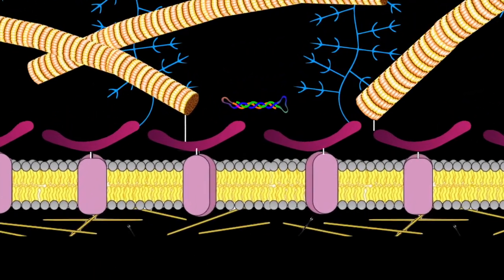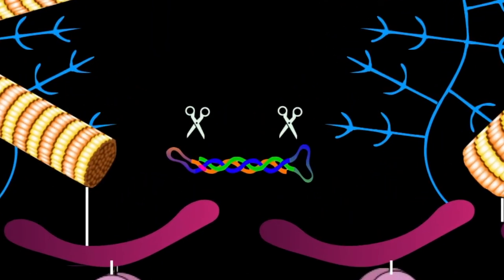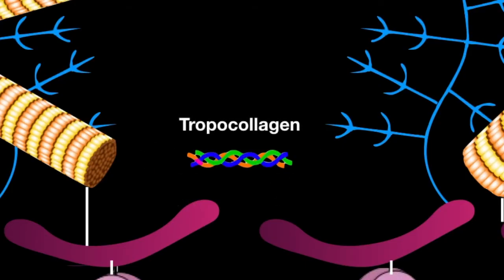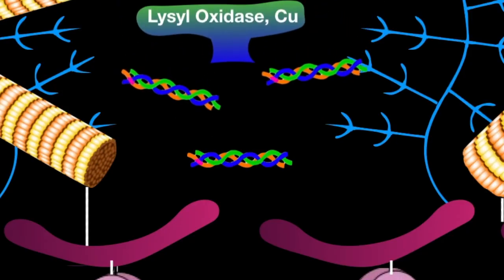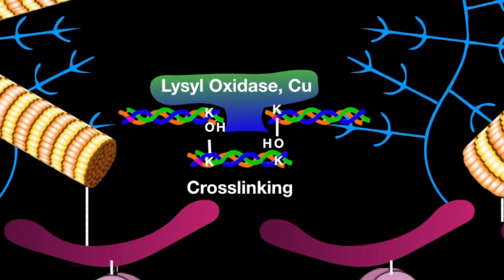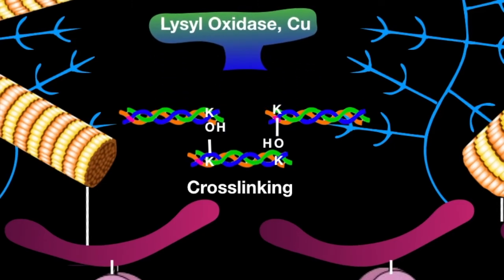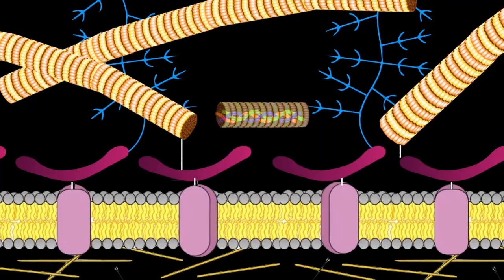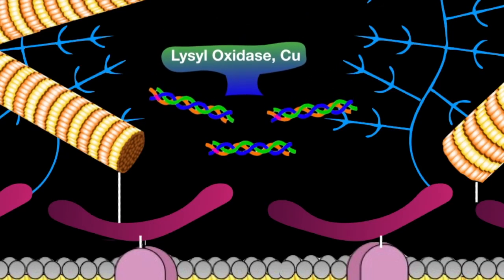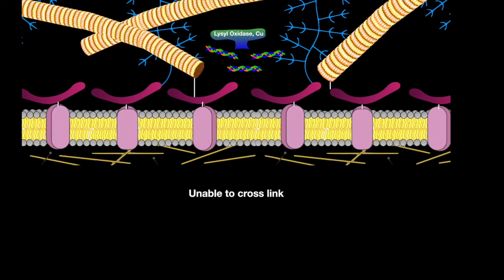As the pro-collagen helix floats around the ECM, enzymes come to cleave the ends that are rich in disulfide bonds. This creates an individual insoluble collagen fiber unit called tropocollagen. Many tropocollagens in the ECM are then cross-linked by enzymes containing copper called lysyl oxidases, which covalently link lysine to hydroxylysines to create the final collagen fibril. If the organism is unable to cross-link, this results in Menkes disease.